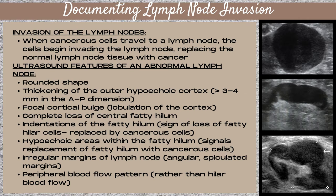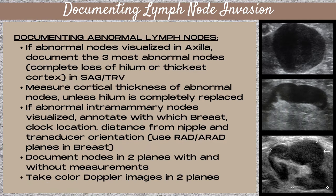Rather than a hilar blood flow pattern, you may see more of a peripheral blood flow pattern. To document abnormal nodes, you want to document the three most abnormal nodes — don't document all of them. The most abnormal features would be complete loss of the hilum or the ones with the thickest cortex.